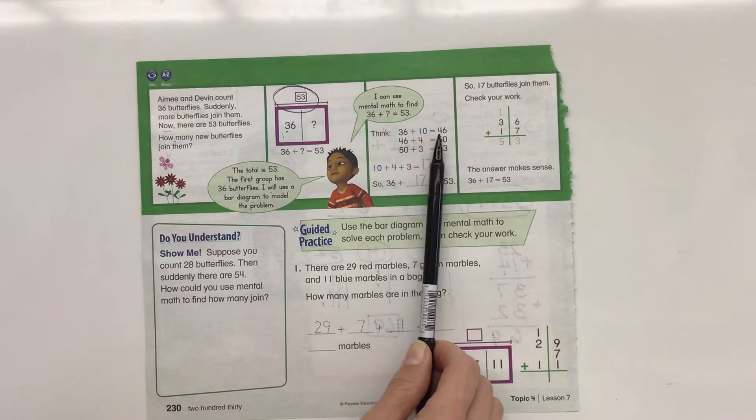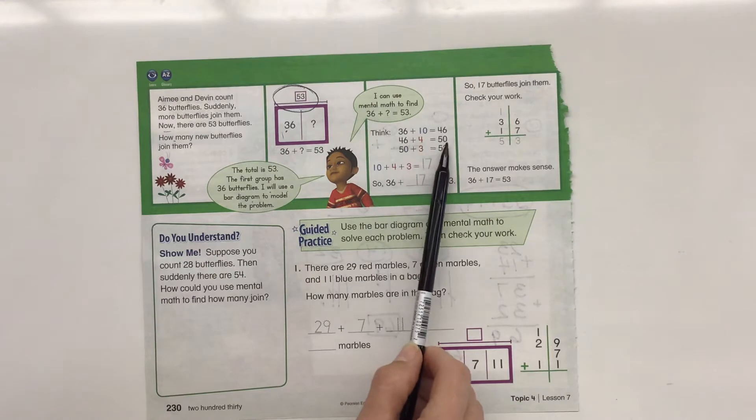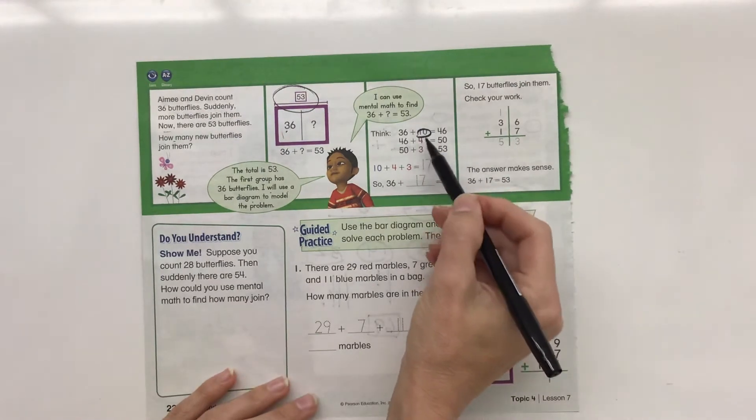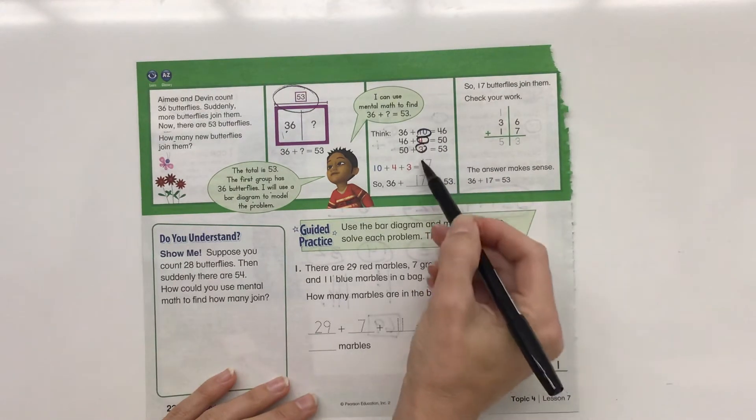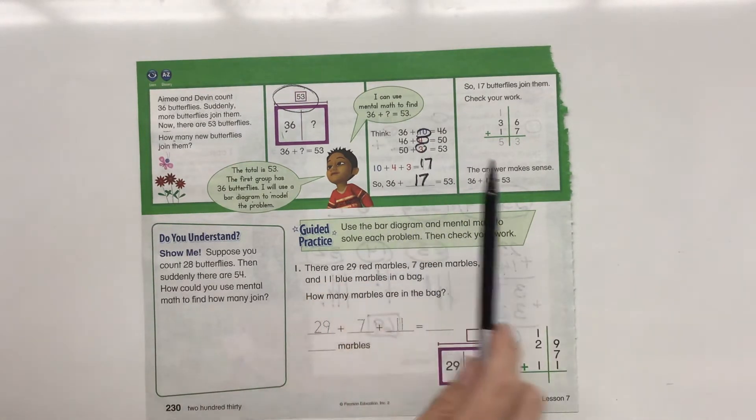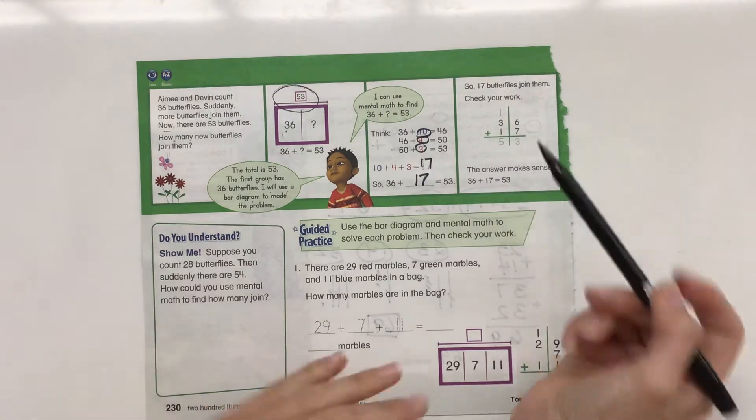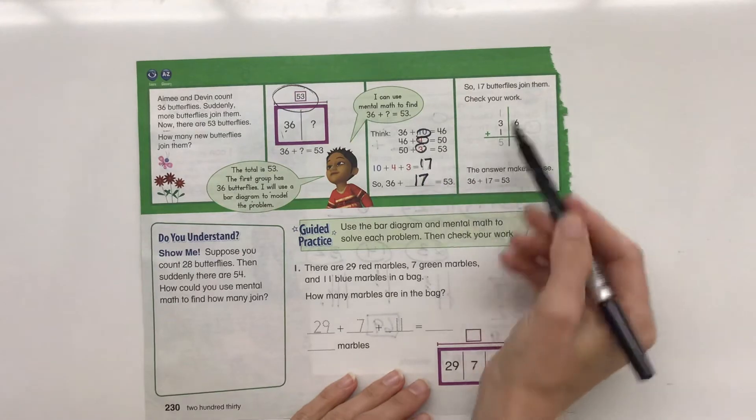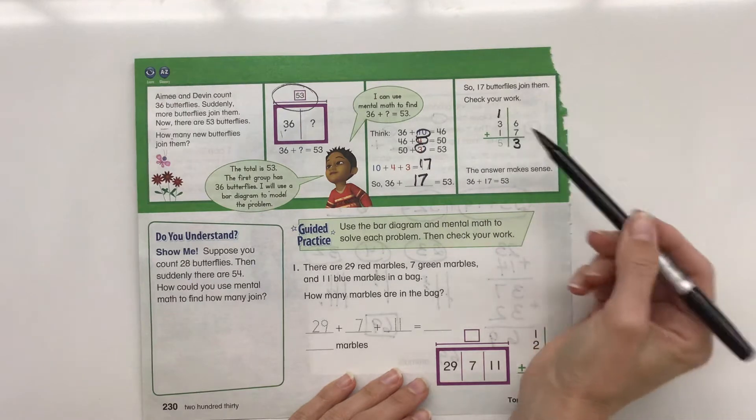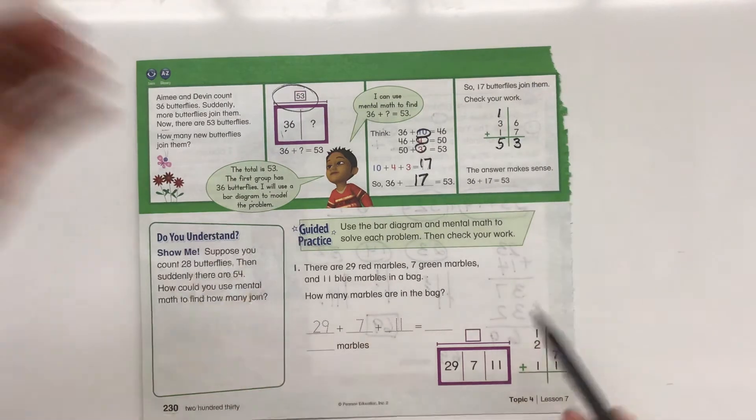I can use mental math to find 36 plus something equals 53. Think 36 plus 10 is 46. Remember we don't want to go over 53. And 46 plus 4 is 50, and 50 plus 3 is 53. So 10 plus 4 plus 3 equals 17. 36 plus 17 equals 53. So 17 butterflies join them. Check your work. We're going to stack them and add 36 plus 17. 6 plus 7 is 13, put the 3 in the ones, regroup that group in the tens. 1 plus 3 is 4 plus one more is 5. So we have a total of 53.